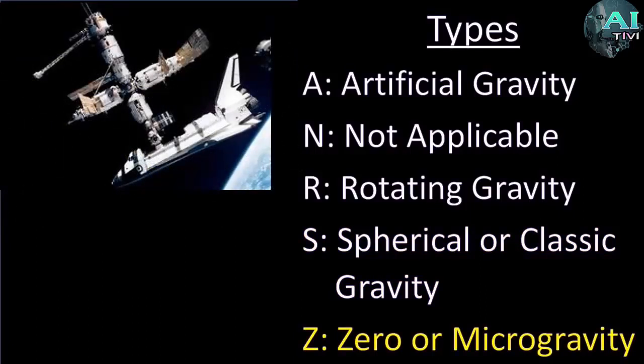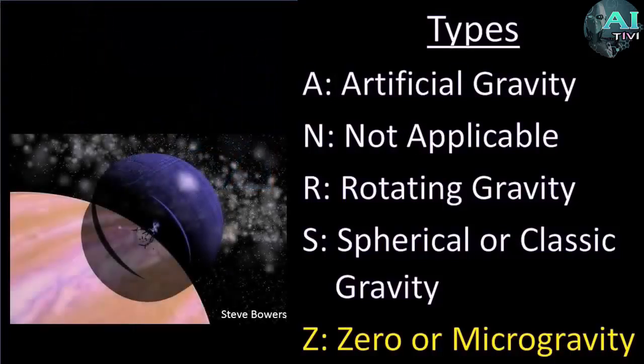Then our last category, which is simply zero gravity or microgravity. These are circumstances where the habitat, the space station, or the artificial world, just does not have any significant amount of gravity felt by the people inside. Besides the space station, you could have habitats that would be large inflated balls full of air.